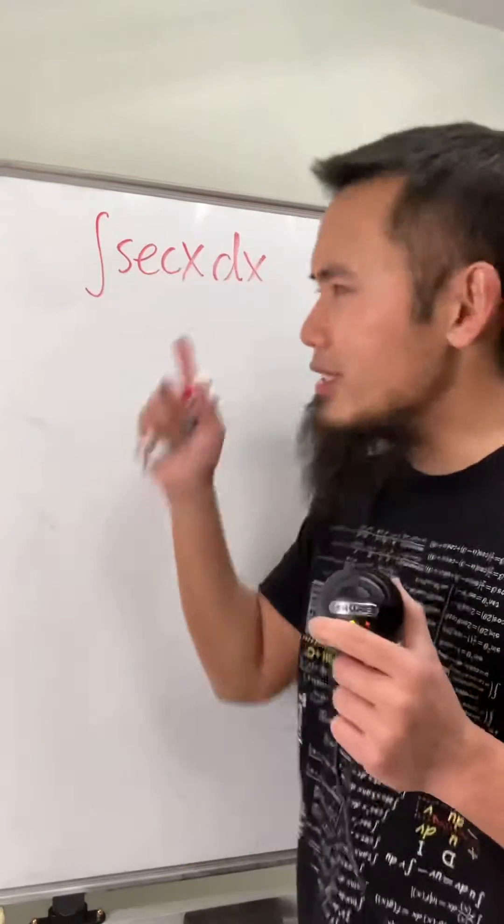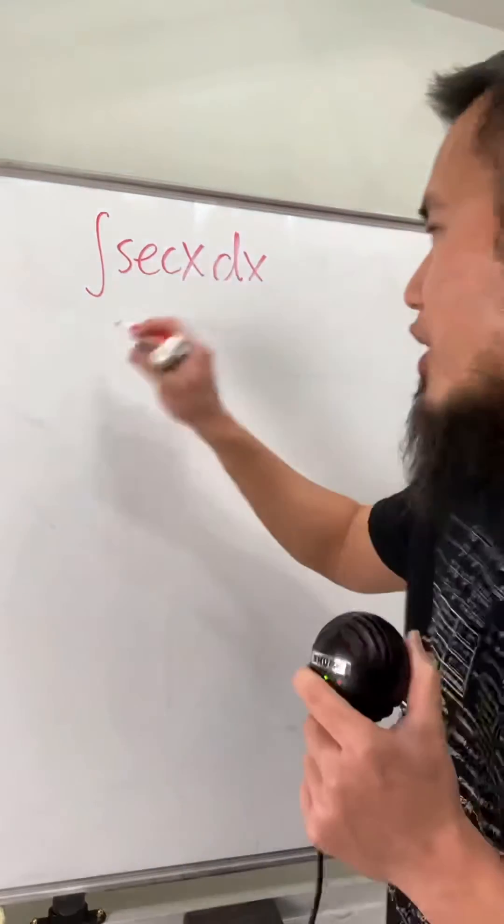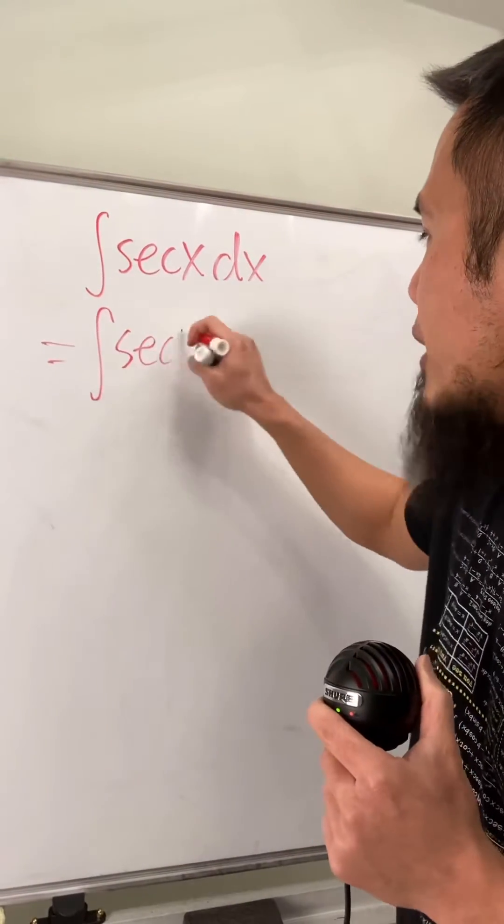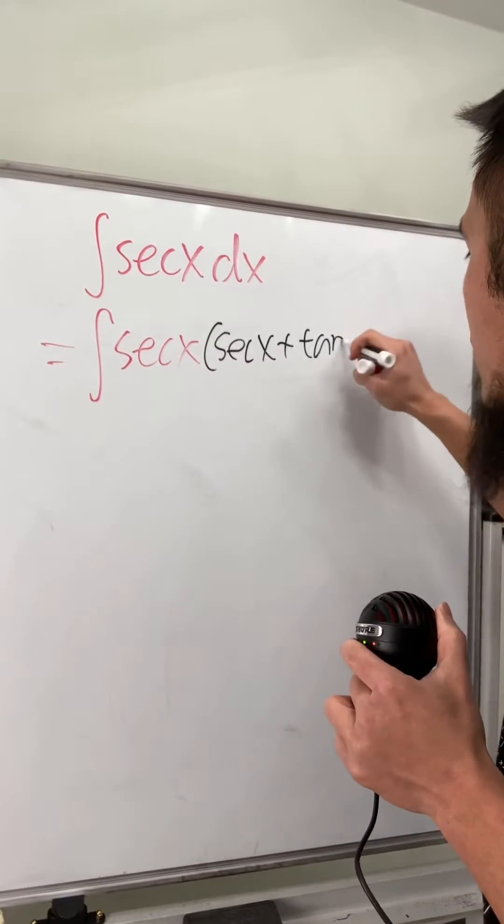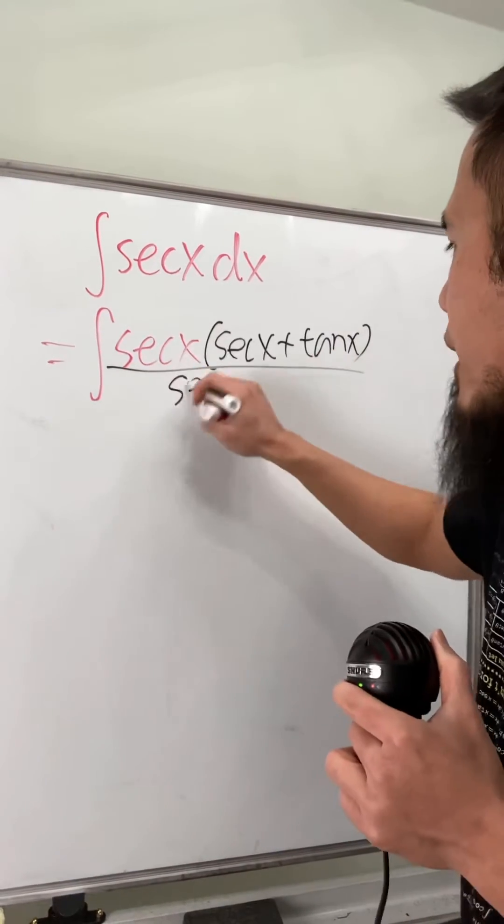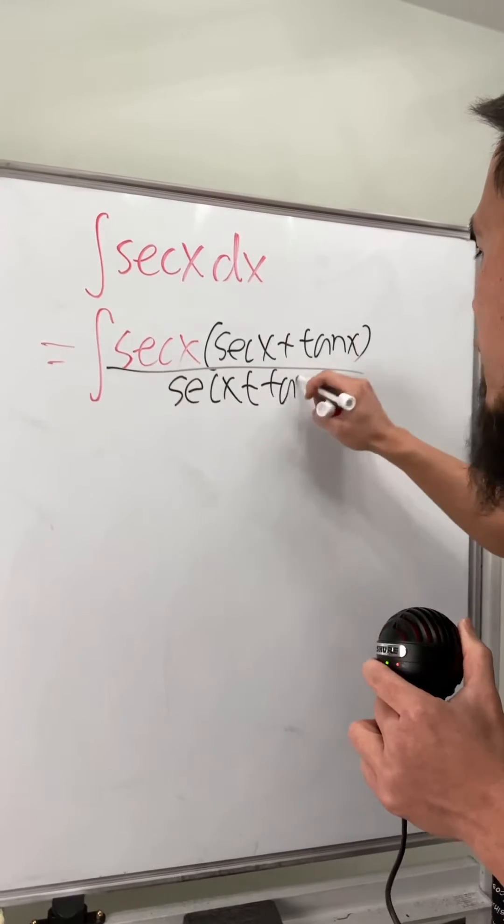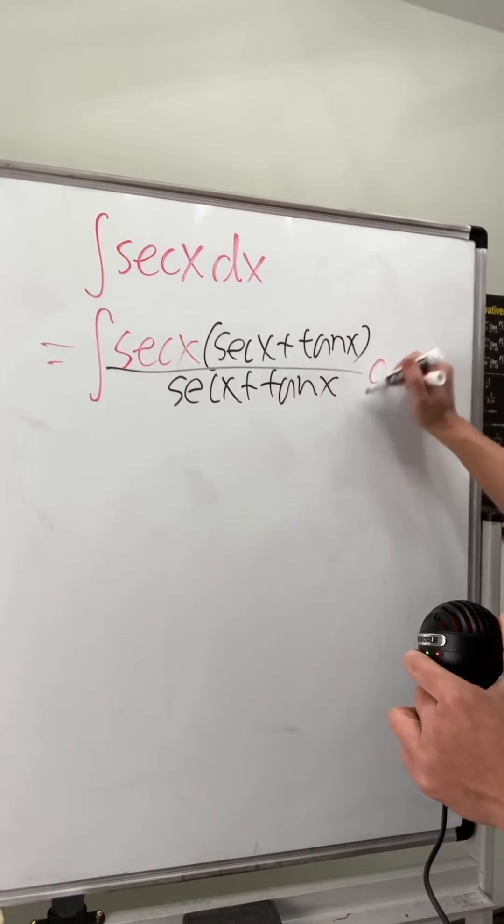That's it. To integrate secant x, let me tell you guys what the secret is. Check this out. I will actually keep the secant x right here just like earlier. And now I will have to multiply the top and bottom by secant x plus tangent x. This way will give you the standard result. Also, just do it this way even though there are other ways to do it, so you can check out my other videos for this. But don't worry about it too much right here.